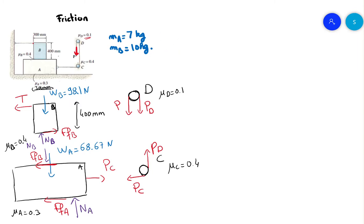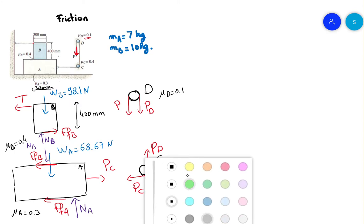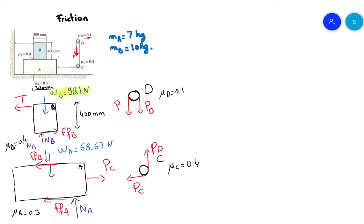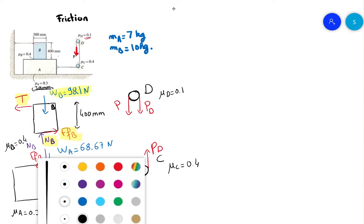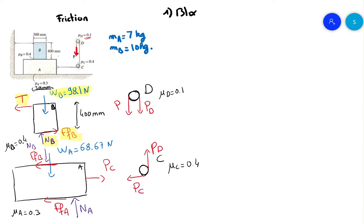A lot of information, but we will be good. I will begin with block B because at block B we have the weight WB and three unknowns, and we have three equations. Scenario 1: block A is slipping on block B.